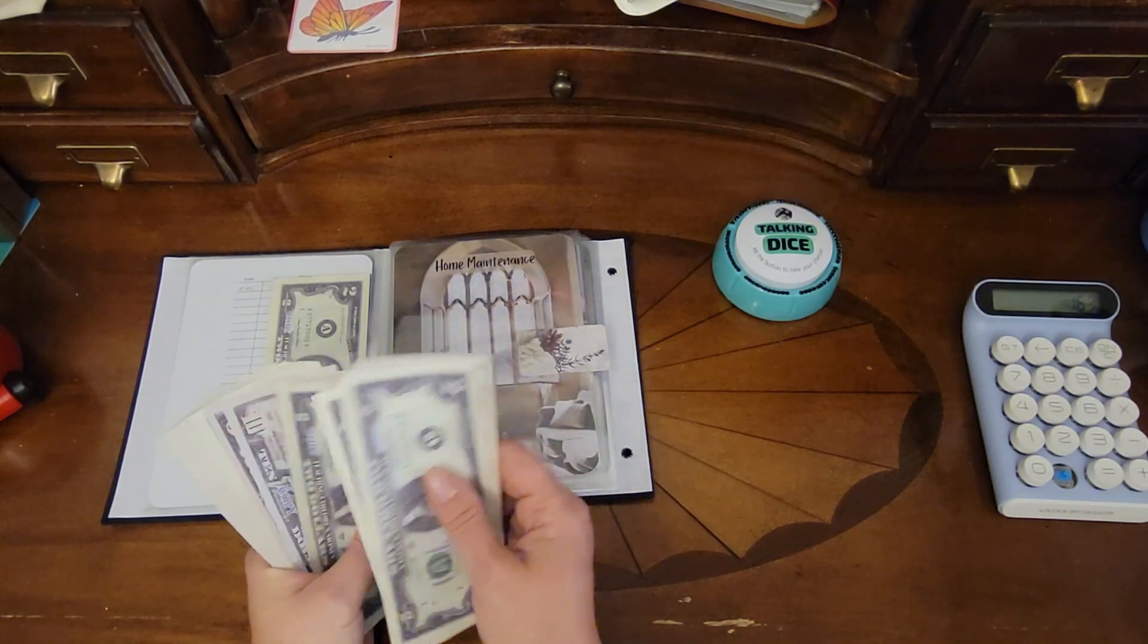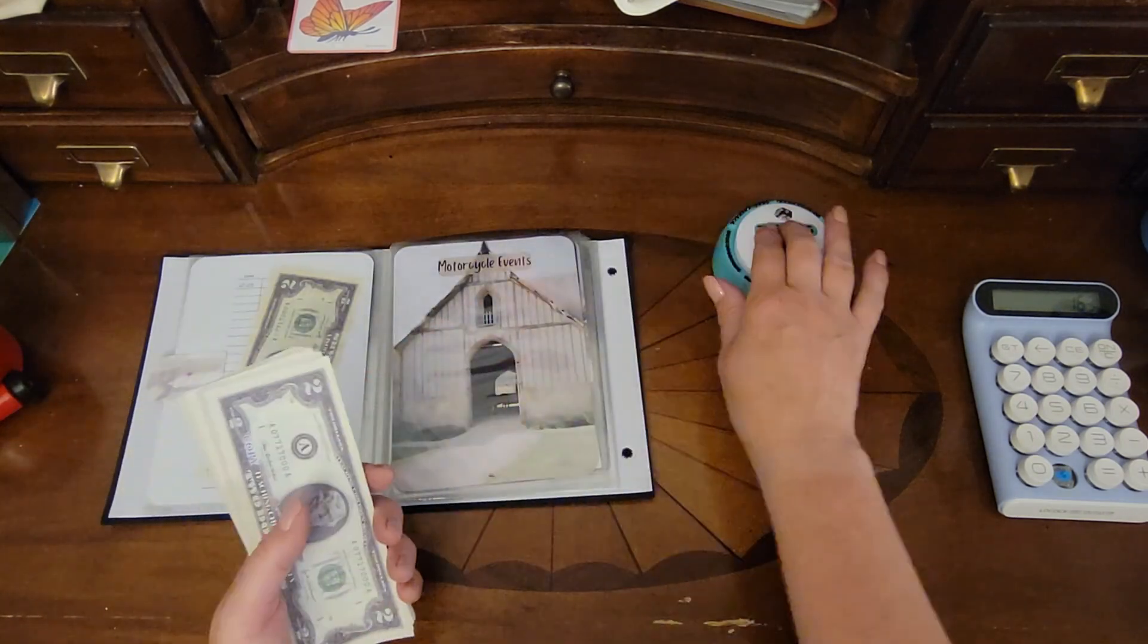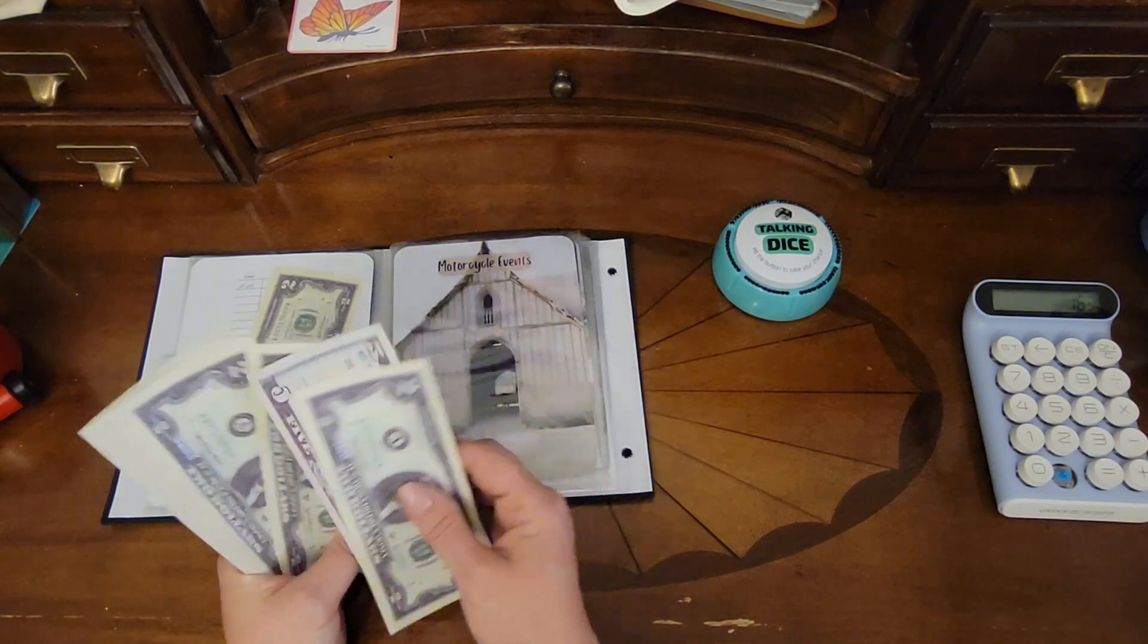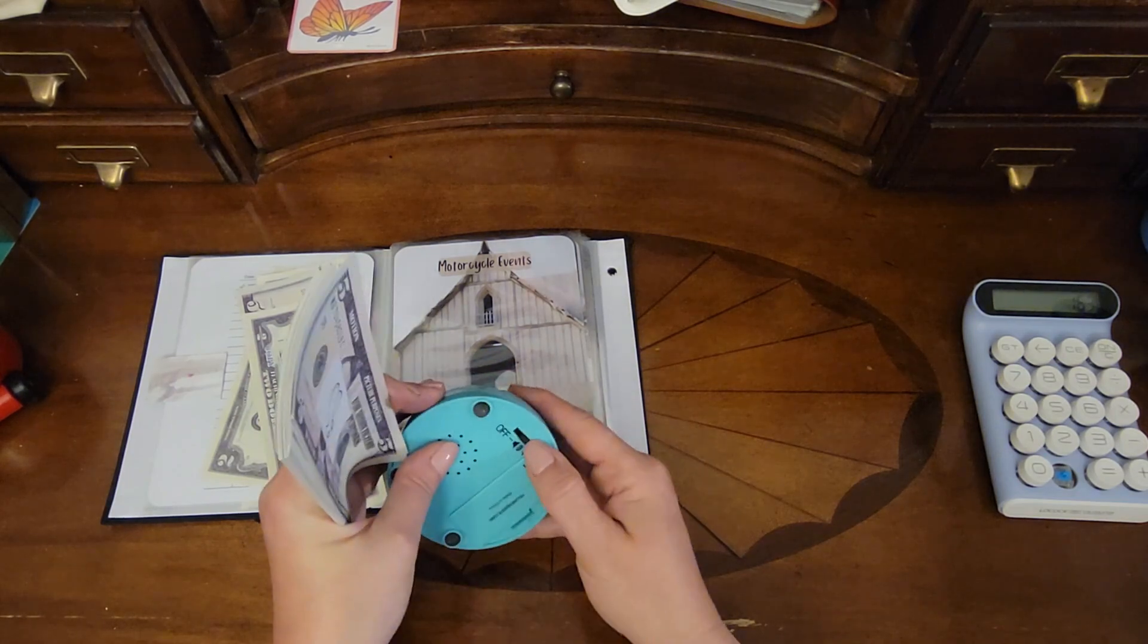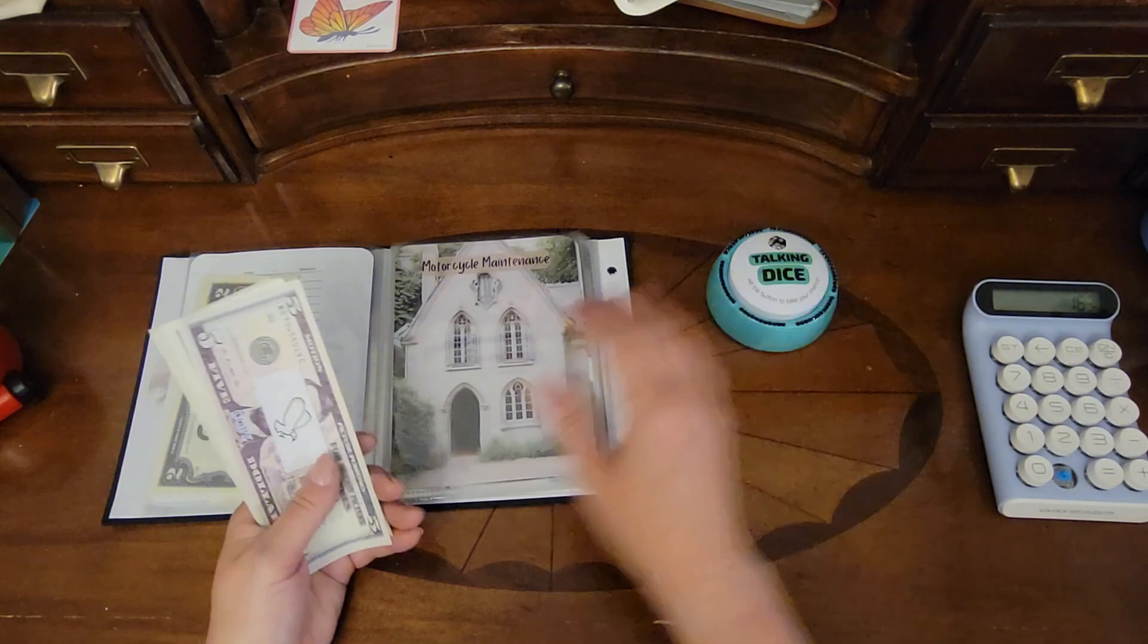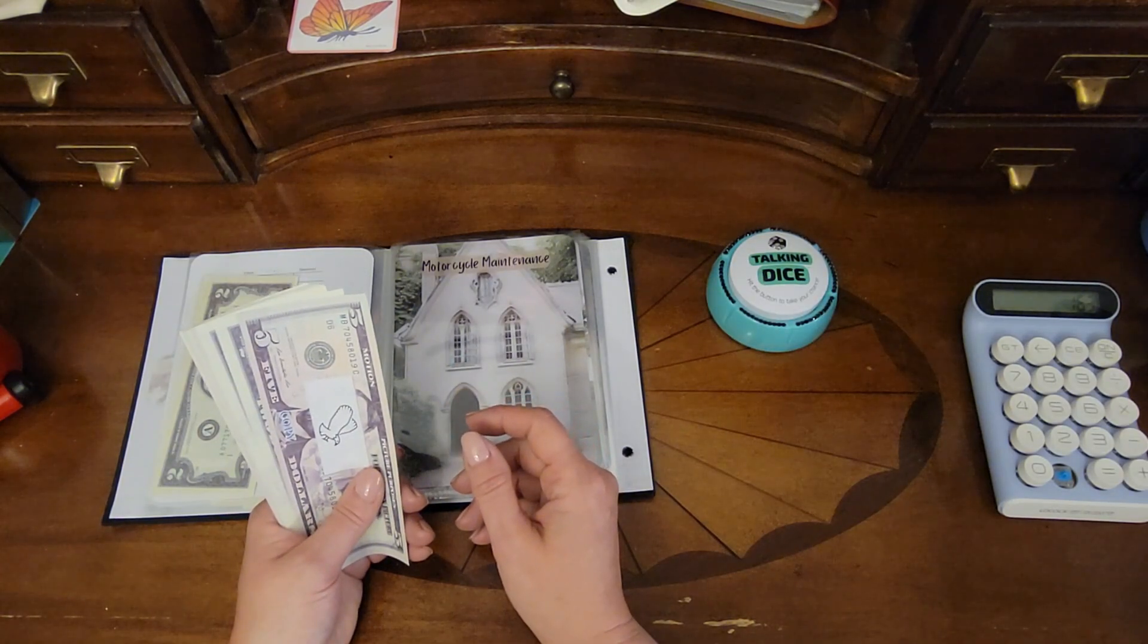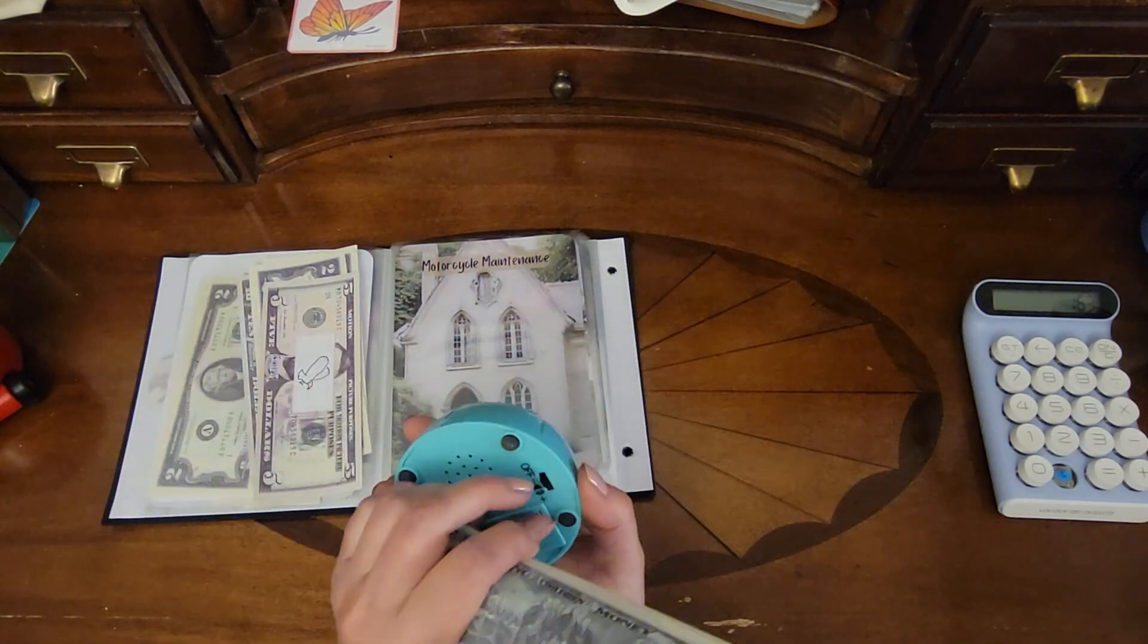Counting out bills - one, two, three, four, five. Oh, that got a five and a ten. Nice. Motorcycle events - one, two, three, four. And that just seems really loud right now. I don't know why I'm in such a quiet mode. Motorcycle maintenance - one, two, three, four. But that made it too quiet.